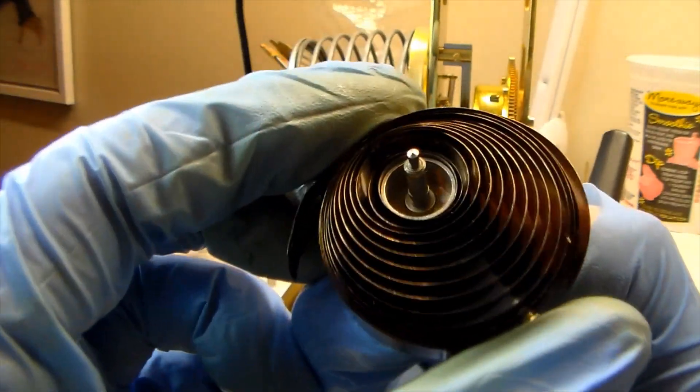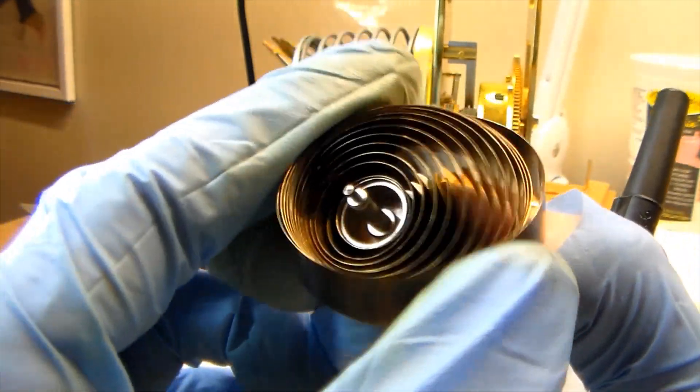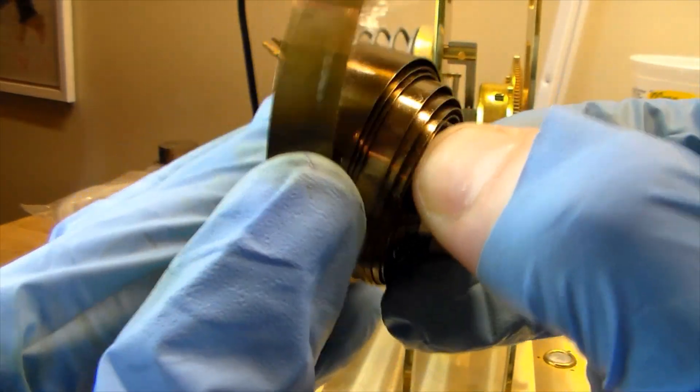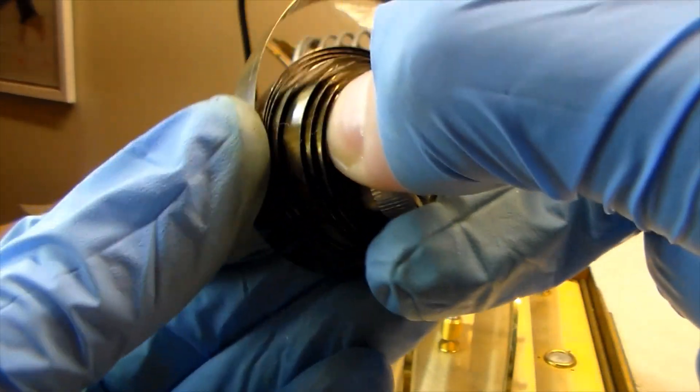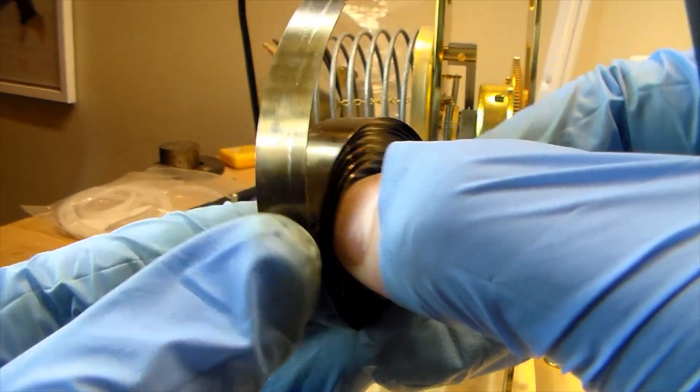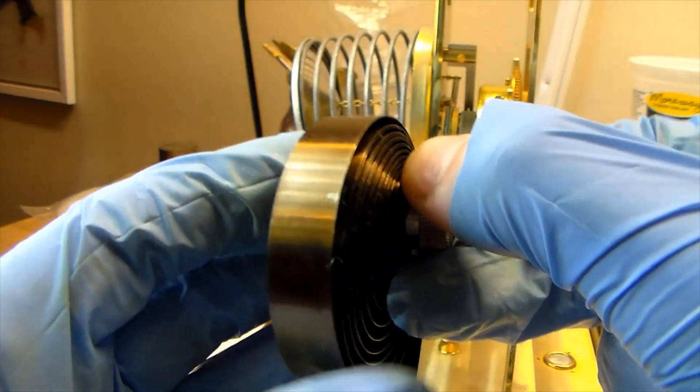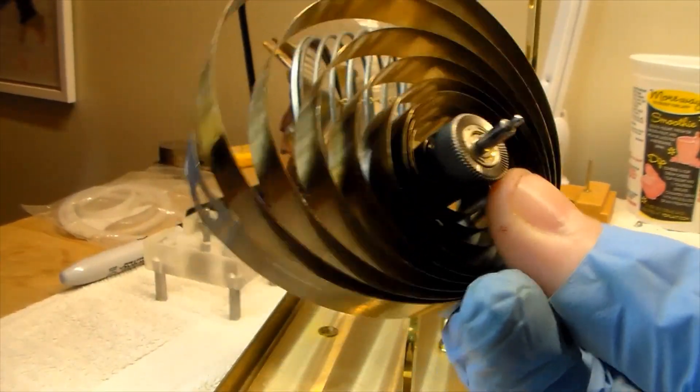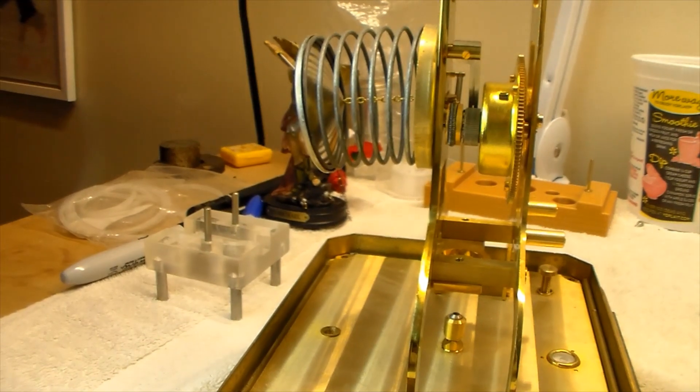Okay and so this mainspring is lubricated with natural oil, Swiss oil, Mobius. And as it gets dry, gummy, and sticky the mainspring is no longer allowed to slide against itself and release the power. So the overhaul is basically the act of cleaning this up and getting the old oil off and putting some fresh stuff on it.